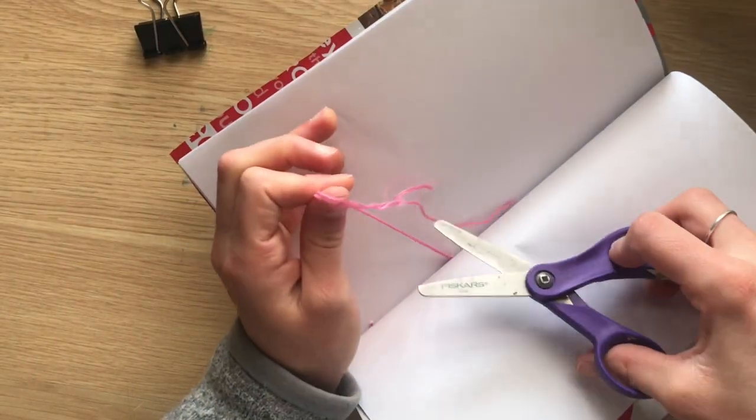After you've got your double knot, cut as closely to the knot as you can in the middle of your book.